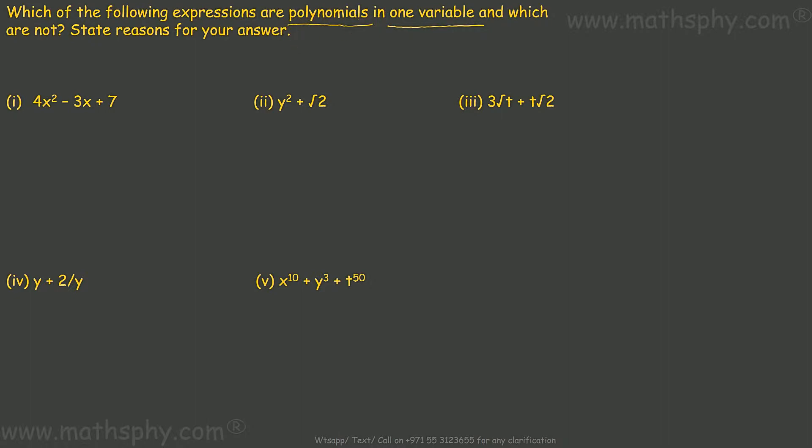This expression here, 4x² - 3x + 7: x has power of 1, x has power of 2, positive integers. It means it's a polynomial. It says one variable. Do you see any other variable other than x? No, so this is one variable.